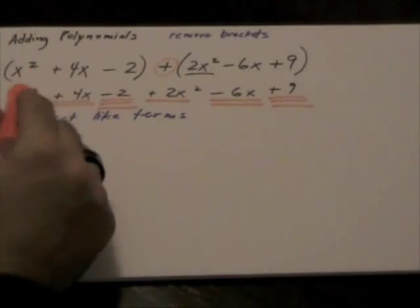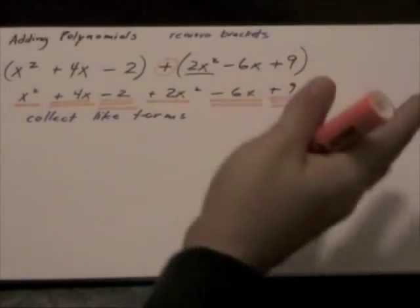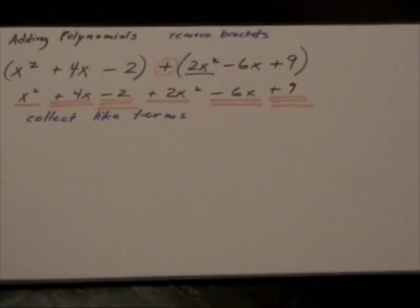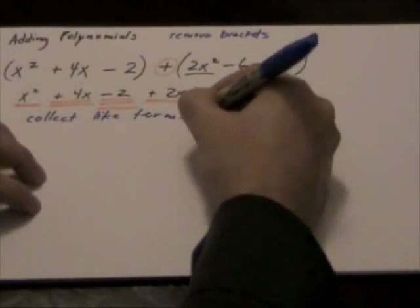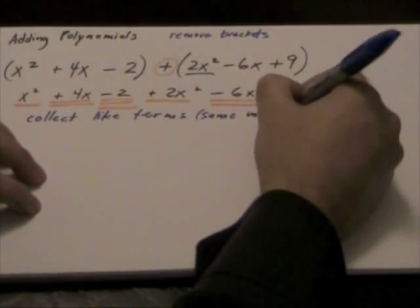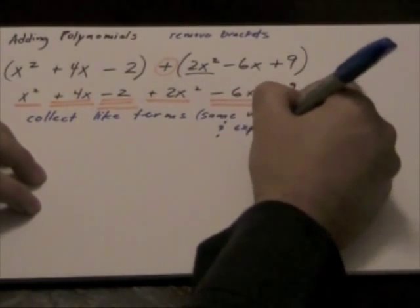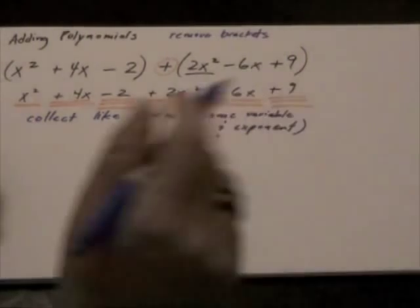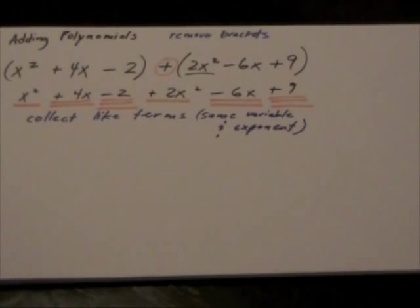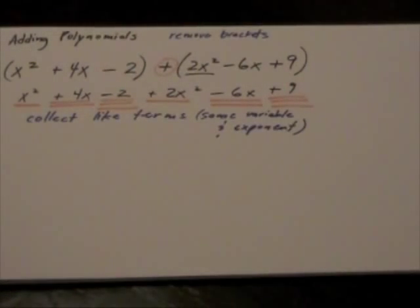Notice here how the variable here is x squared, x squared. When we're collecting like terms, remember that like terms have the same variable and exponent. If it doesn't have an exponent or it doesn't have a variable, that's a constant like this minus 2 and this positive 9.